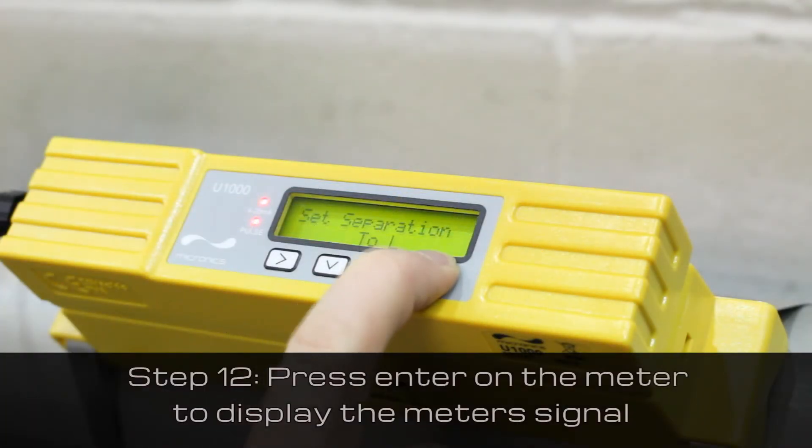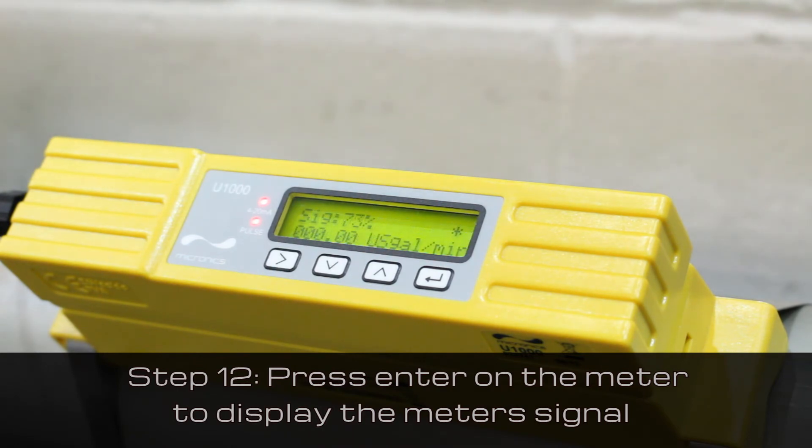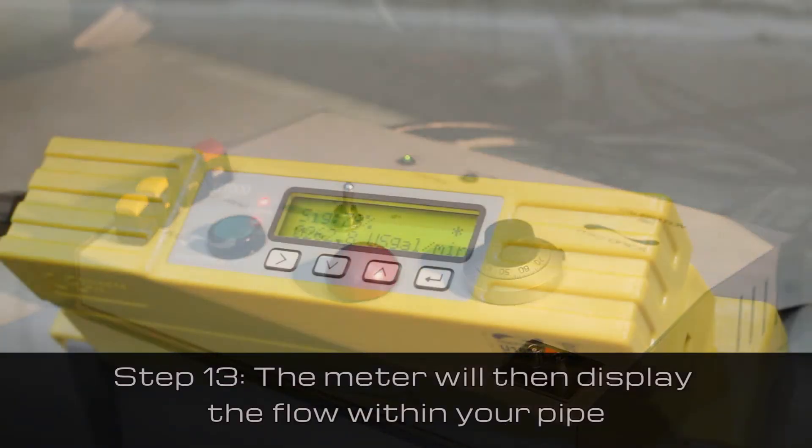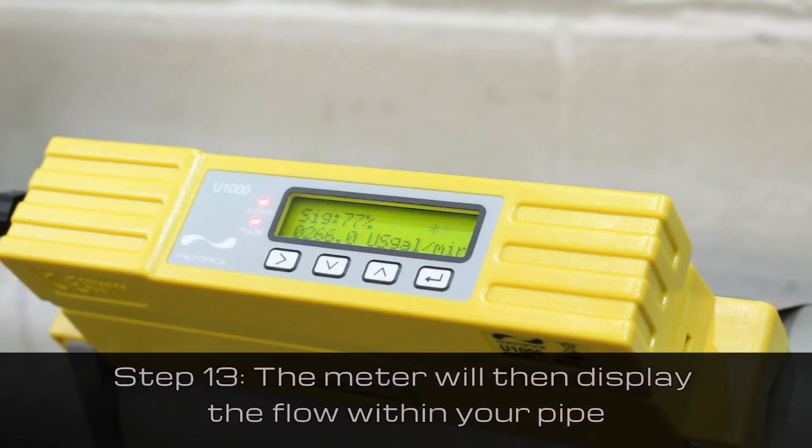Press Enter on the meter. This will then display the meter's signal. Once the flow has been switched on, the meter will display the flow within your pipe.